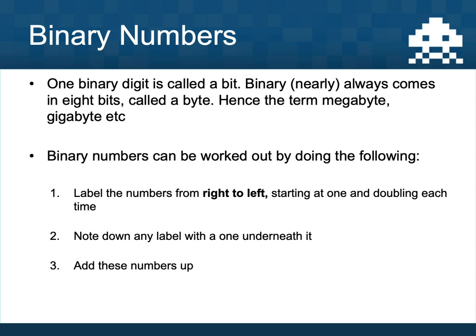One binary digit — a one or a zero — is called a bit, and one bit represents one switch. Binary nearly always comes in groups of eight, and those are called a byte. So eight switches in a row is called a byte, and that's where terms like megabyte and gigabyte come from. The first thing we might want to do is convert binary code into a normal number — a human number — and that's called a denary number.